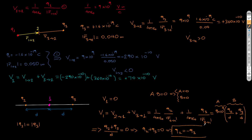So Q2 equals minus Q3. What this tells me: if Q2 is a proton, then to make the electric potential at location 1 equal to zero, Q3 must be an electron. If Q2 is an electron, then Q3 must be a proton. If Q2 is 1 nanocoulomb (10 to the minus 9 coulombs), then Q3 must be minus 1 nanocoulomb to make the electric potential at location 1 equal to zero.